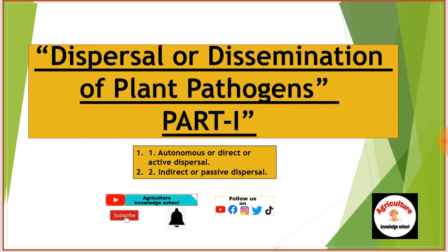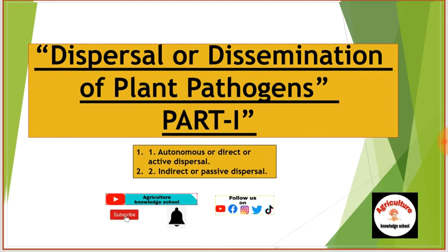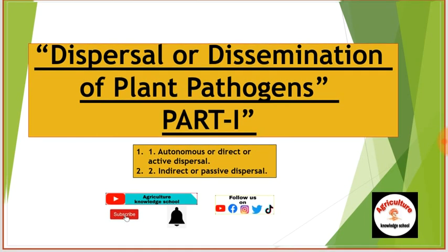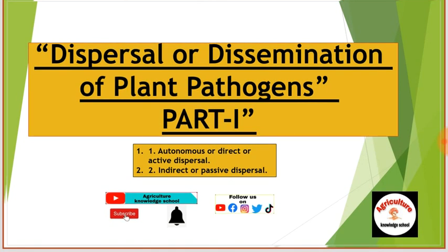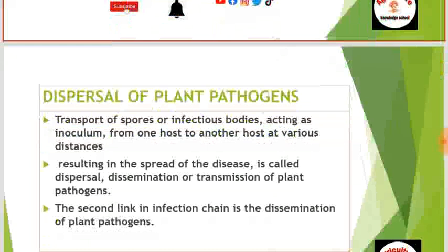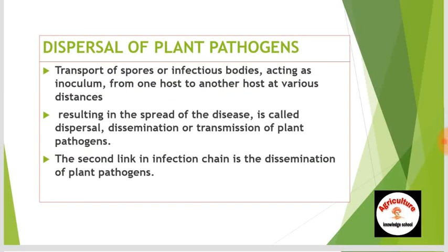There are two types of the dissemination of plant pathogens. First is autonomous or direct or active dispersal. Second is indirect or passive dispersal. Transport of spores or infectious bodies acting as inoculum from one host to another host at various distances, resulting in the spread of the disease, is called dispersal, dissemination or transmission of plant pathogens.